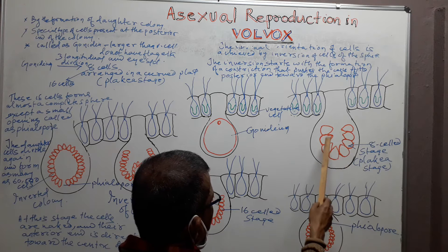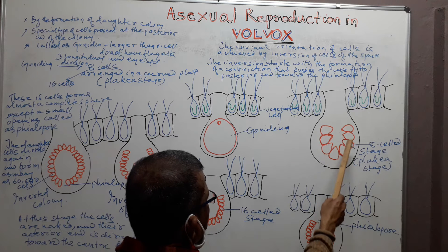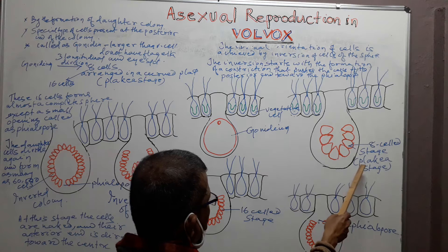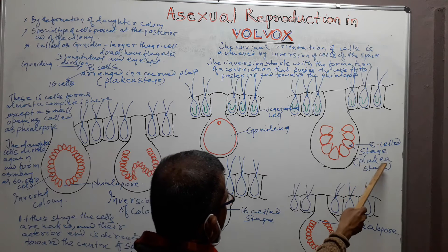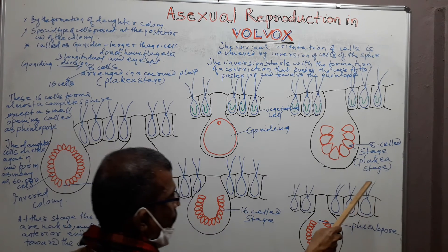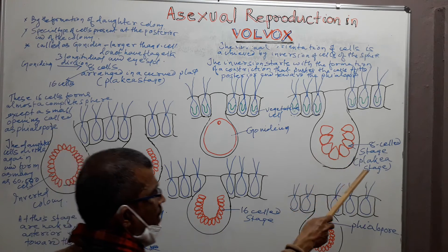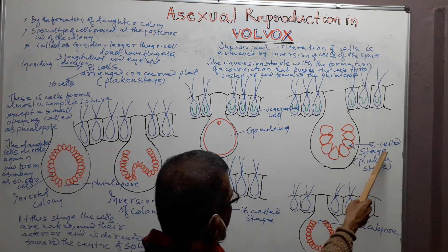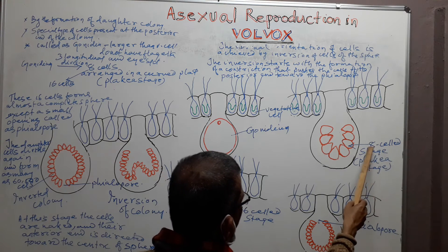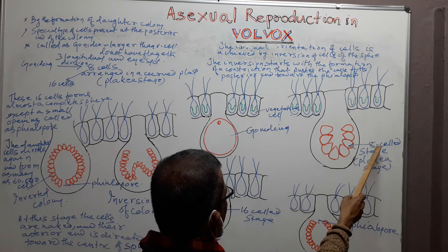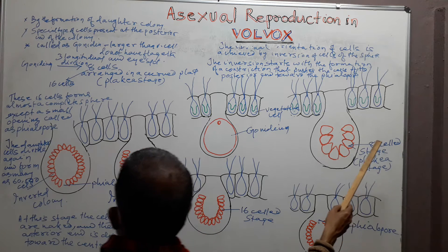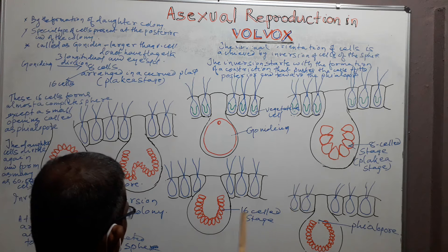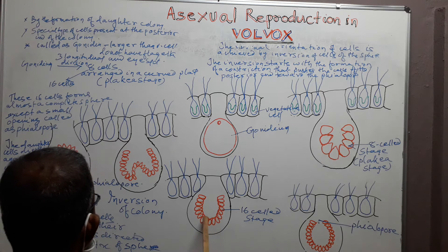These eight daughter cells are arranged in the form of a curved plate. This stage is known as Plakosphaera. The Plakosphaera contains eight daughter cells. Each of the eight daughter cells divide again to form sixteen daughter cells.